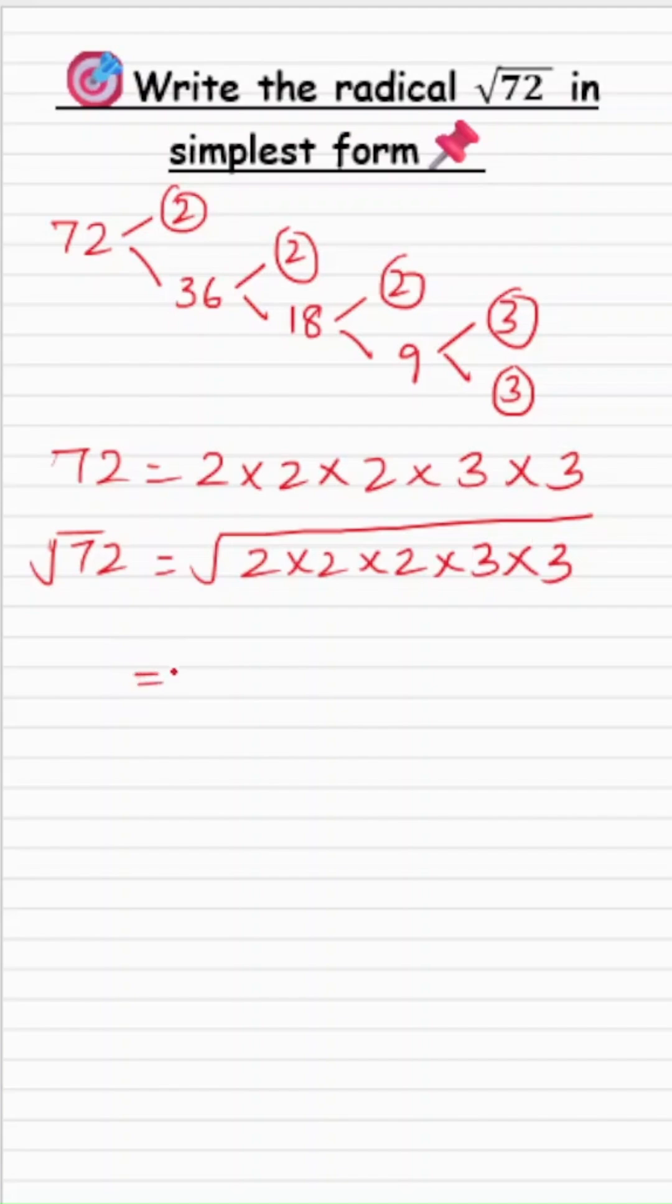And now, since the index of this radical is 2, it's square root. So, I will be forming the pairs or the groups of the same number. So, one group is this and one group is this. This 2 is left alone because we do not have any other 2 with which I can make it a pair. So, this 2 is left over.